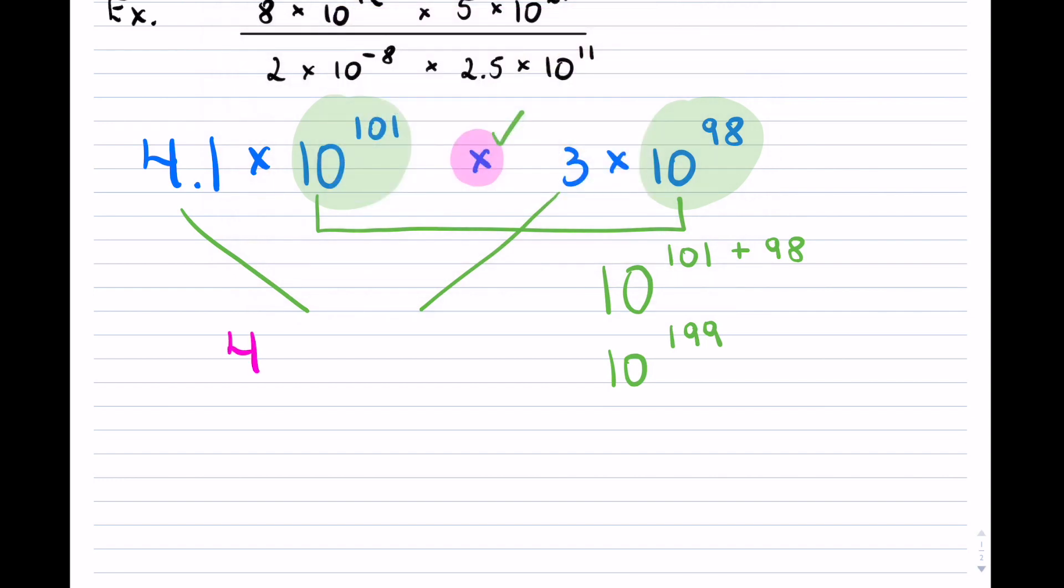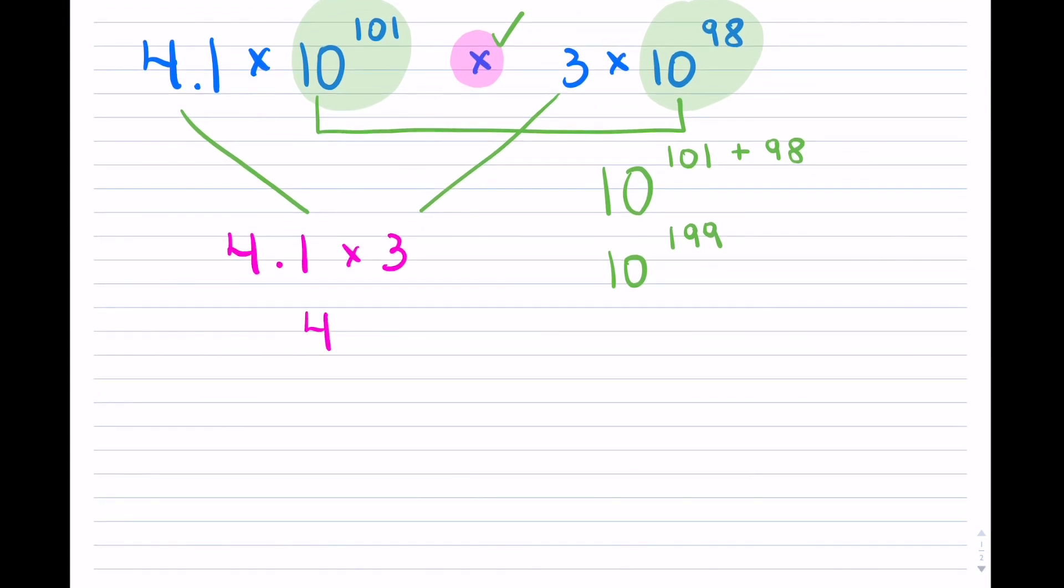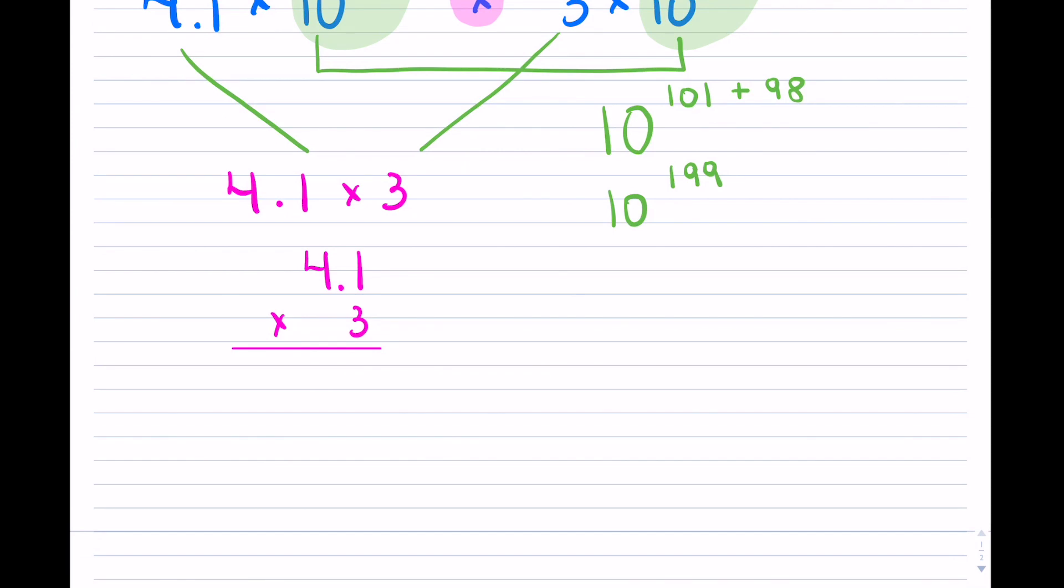We have 4.1 times 3. We can try this, so 4.1 times 3. Remember that multiplying decimals, you just multiply the same way as you would regular whole numbers. So 3 times 1, 3 times 4 which is 12. Now I have one decimal place here, no decimal places here, so in total my answer should have one decimal place.